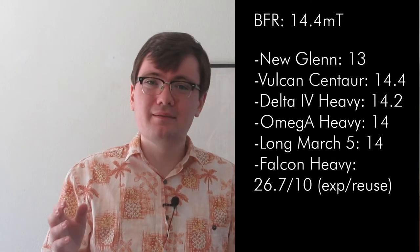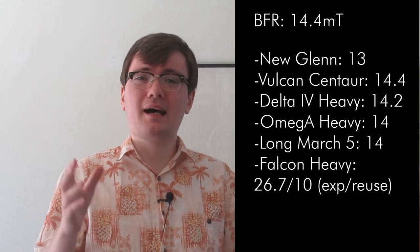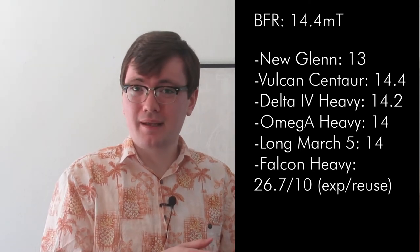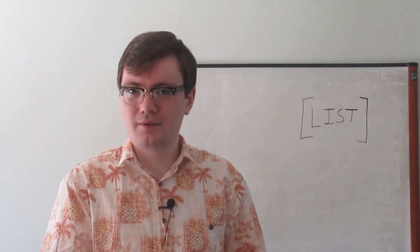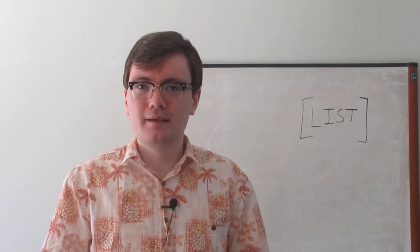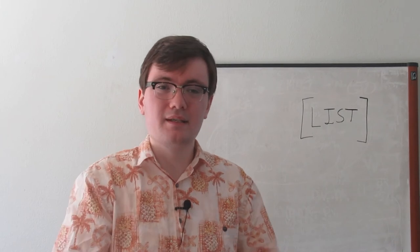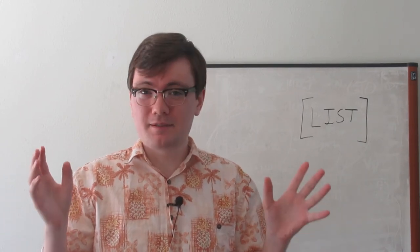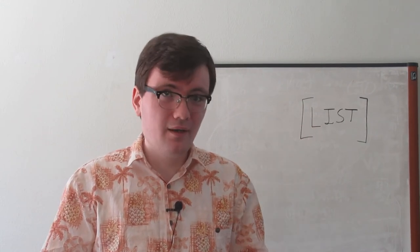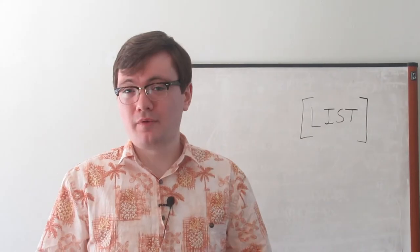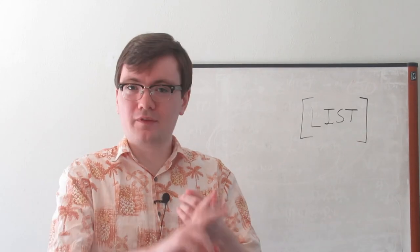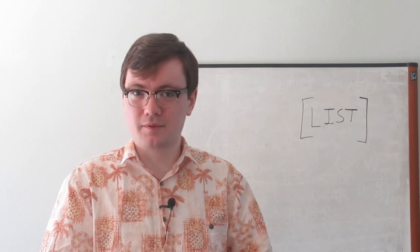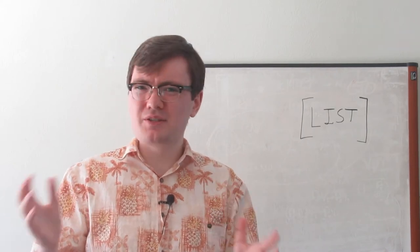Is that better than existing launchers? It's about the same as a Delta IV Heavy, New Glenn, Vulcan Centaur, Long March 5, and Omega Heavy. And then a Falcon Heavy Expendable has better performance. Now, that 14.4 metric tons to GTO does not include reusability penalties. I don't know how much propellant SpaceX intends to use for, you know, the landing, how much it's needed, what the heat shield weighs, any of SpaceX's operational plans for Starship, so I'm just speculating here. But I would suspect that that 14.4 goes down to somewhere near zero for a baseline Geostationary Transfer Orbit.